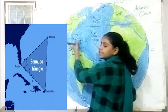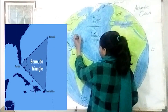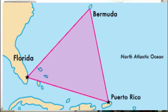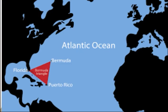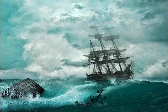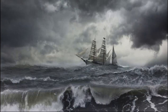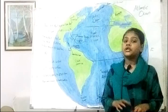This is the Bermuda Triangle. It is a 1.5 million square mile area of ocean where a number of ships and planes have disappeared under highly unusual circumstances.